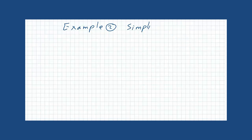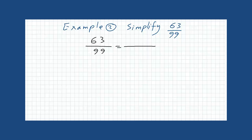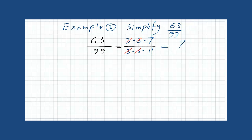Example 2: Simplify 63 over 99. 63 is 9 times 7, so we can write it as 3 times 3 times 7. 99 is 9 times 11, so we can write it as 3 times 3 times 11. We cancel the common factors, and the final answer is 7 over 11.